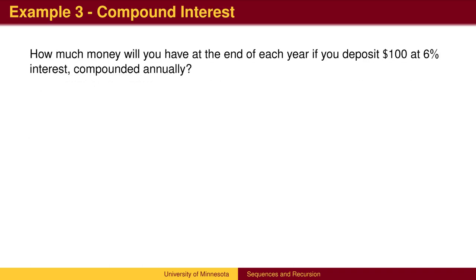A commonly used recursive formula is that of compounding interest. We have an initial deposit, and then each year, we accrue interest.